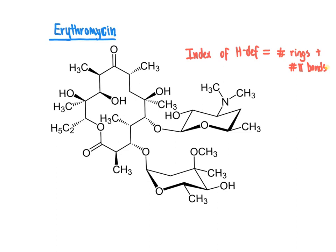I'm going to highlight all pi bonds in yellow — there's one here and one here. Then I'll highlight all rings in green: we've got one giant ring, which we call a macrocycle since it's a really large ring. We also have a chair conformer here and another chair conformer here, giving us those additional rings. Counting up three rings plus two pi bonds, the index of hydrogen deficiency for erythromycin is five.